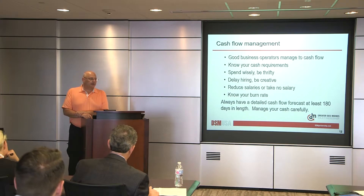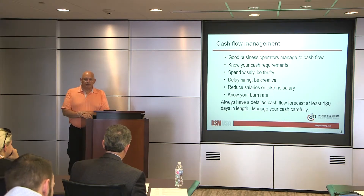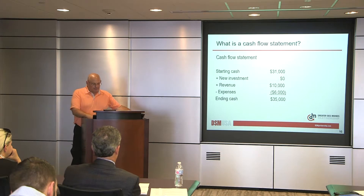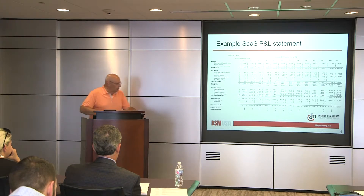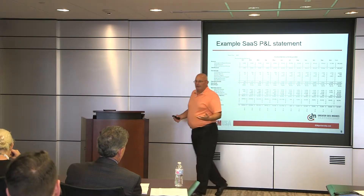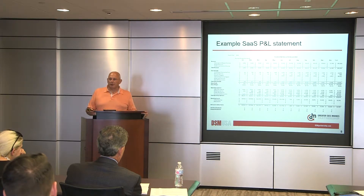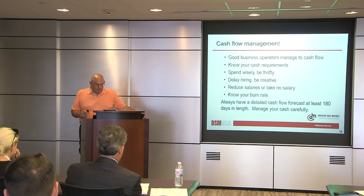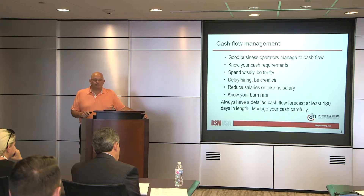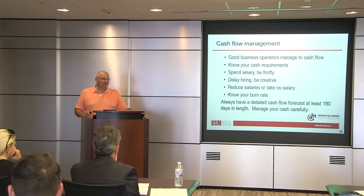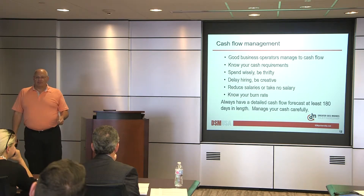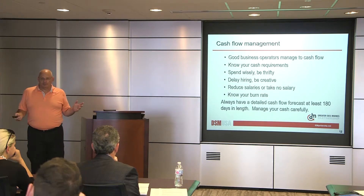You're going to hear the word burn rate a lot. Burn rate means how much cash do you burn through every month. If you look at the P&L statement across the bottom and look at total expenses — $10,000, $22,000, $16,000, $15,000, $27,000 — by the end of the year she's burning about $20,000 a month. That's her burn rate. A good operator looks at this every day. They know their cash position every day. You don't survive unless you know this.